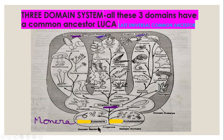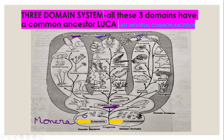This is the same progenote from where the five kingdoms or three domains have arisen. So the five kingdoms were Monera, Protesta, Fungi, Plantae, and Animalia, and all these were merged into three domains: Eubacteria, Archibacteria, and Eukarya. It is now clear where Archibacteria or Domain Archaea fits. All three domains have a common ancestor known as LUCA, or Last Universal Common Ancestor — this is the progenote.